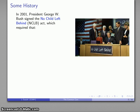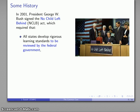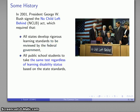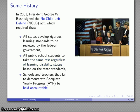In 2001, President George W. Bush signed the No Child Left Behind NCLB Act, and this act required three important things. First, that all states develop rigorous learning standards to be reviewed by the federal government. All public school students to take the same test regardless of learning disability status based on the state standards, and that schools and teachers that fail to demonstrate adequate yearly progress be held accountable.